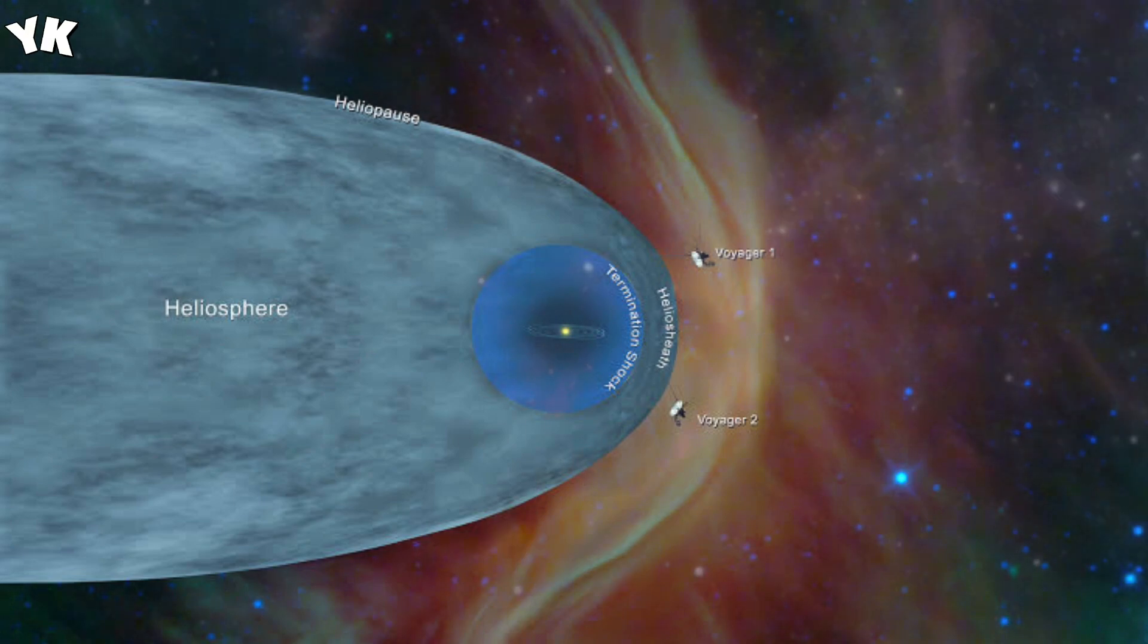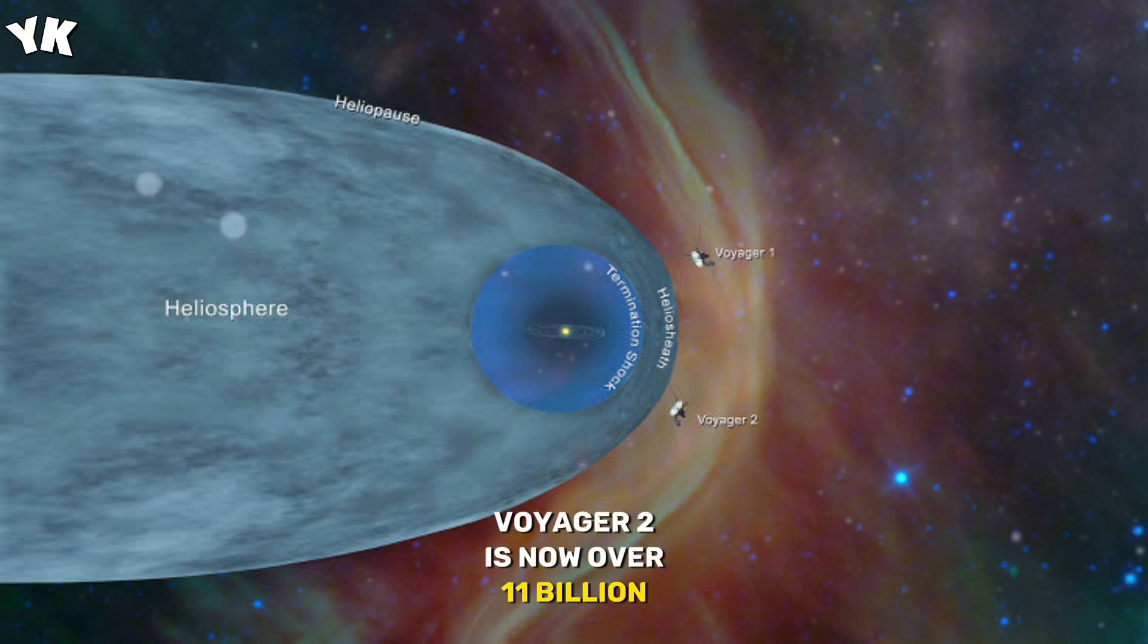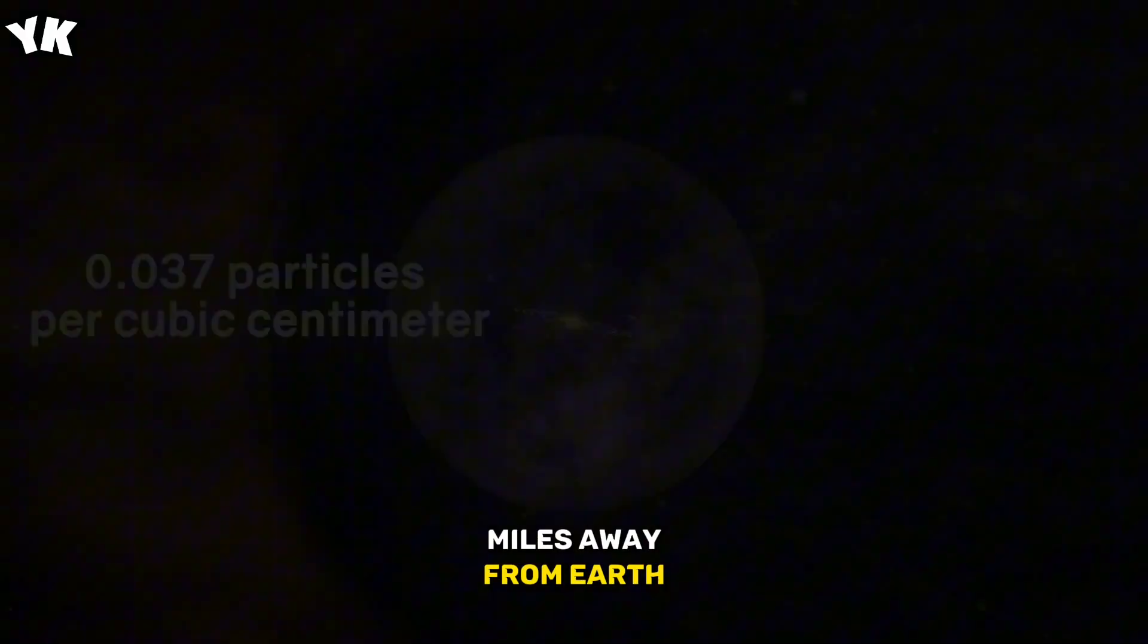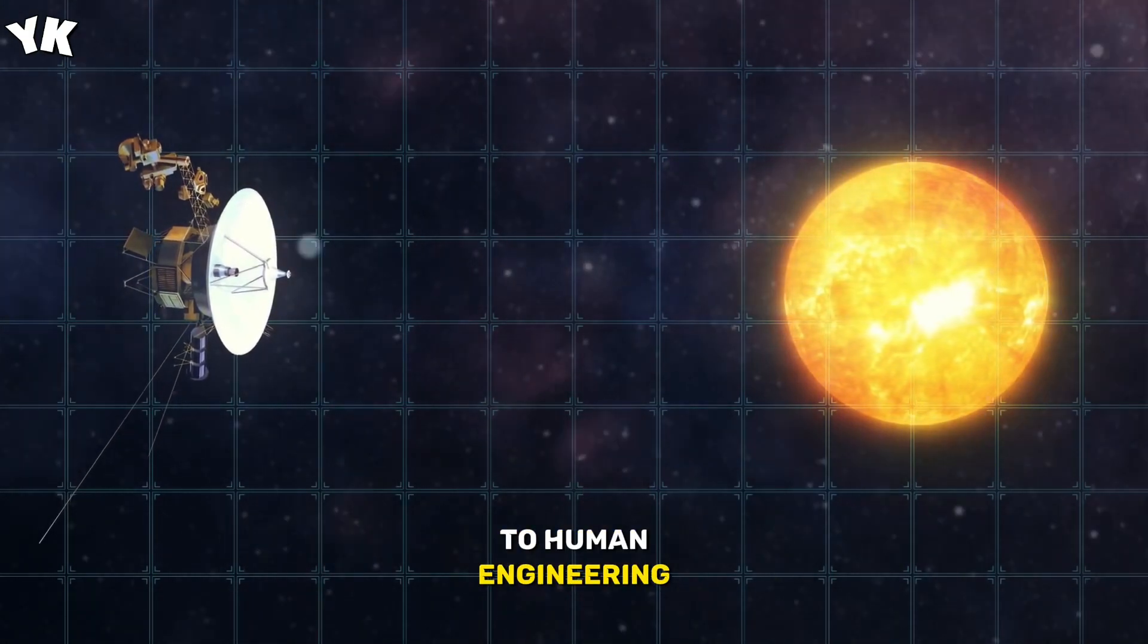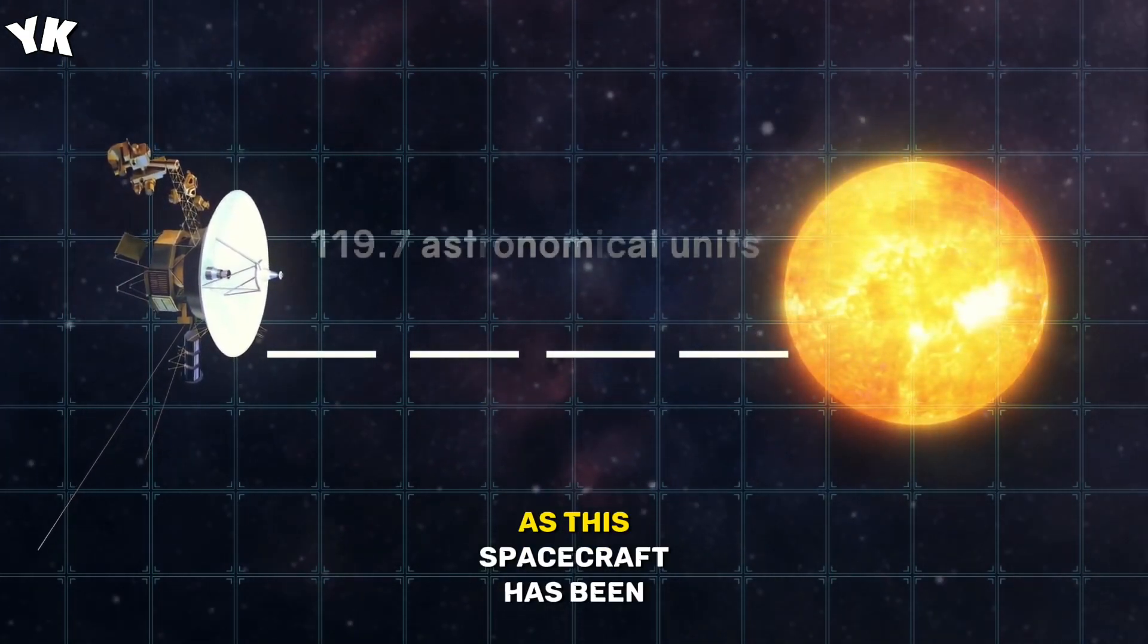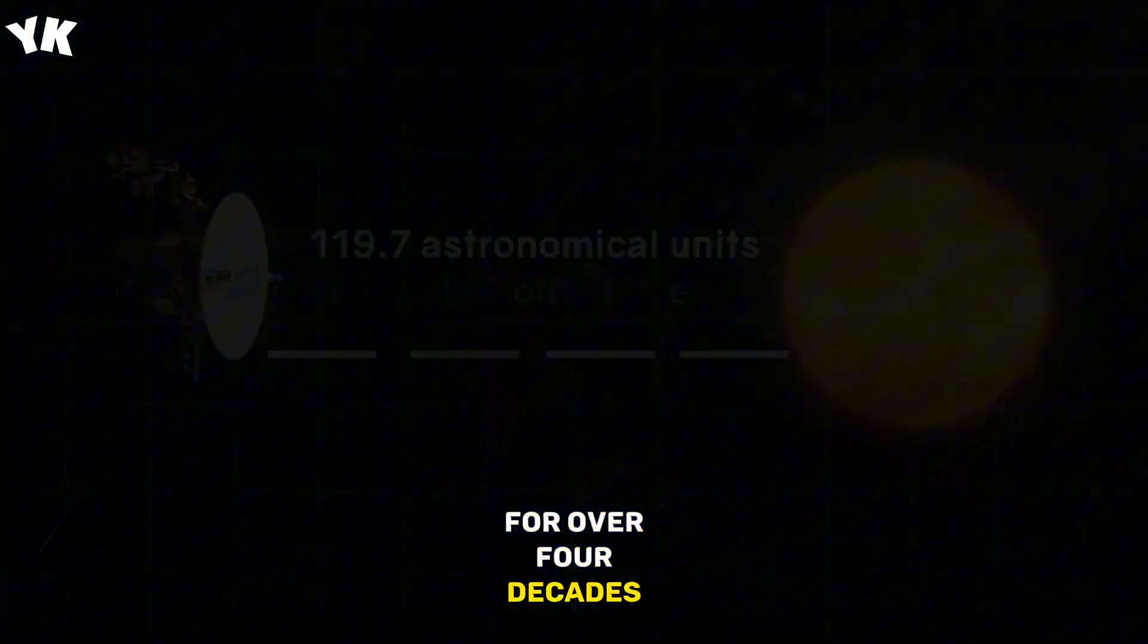The journey beyond. Voyager 2 is now over 11 billion miles away from Earth, and it's still sending us invaluable data. It's an incredible testament to human engineering and curiosity, as this spacecraft has been exploring the cosmos for over four decades.